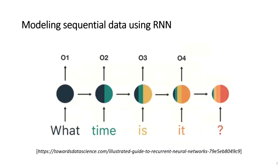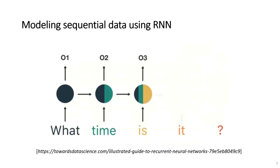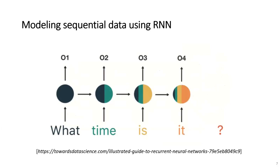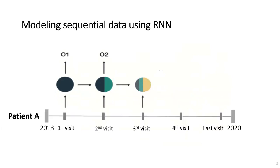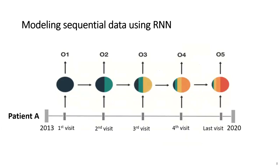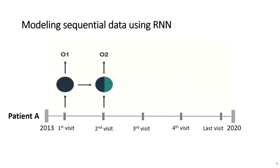Recurrent neural networks have been widely used for modeling sequential data such as natural language and speech recognition. For example, the words in the sentence 'what time is it' are sequentially fed into the RNN, and the last output of the RNN captures the sequential information of all the words. Similarly, if we use EHR data instead of words — where visits replace words — the output of the RNN captures information from all past visits of the patient.